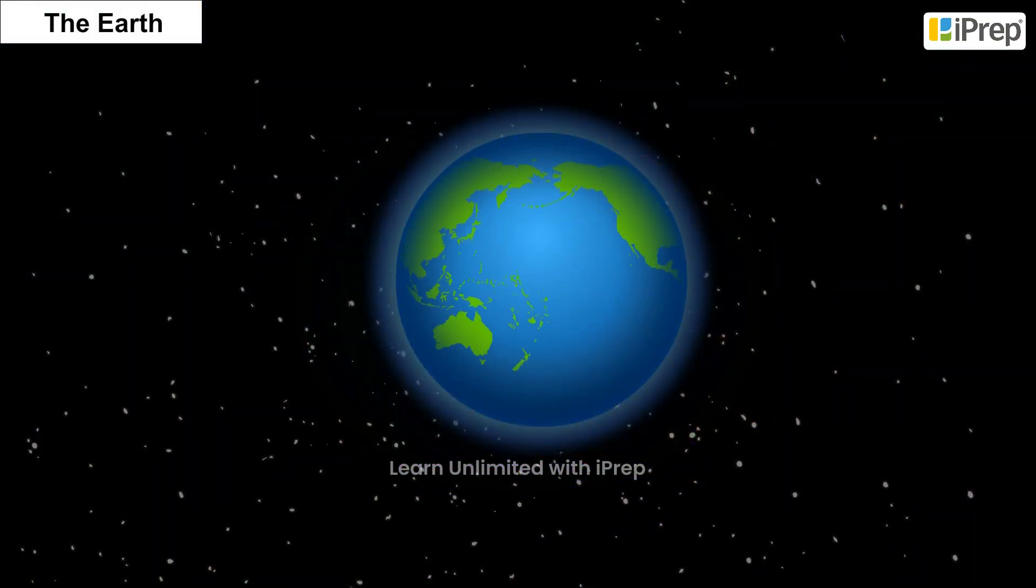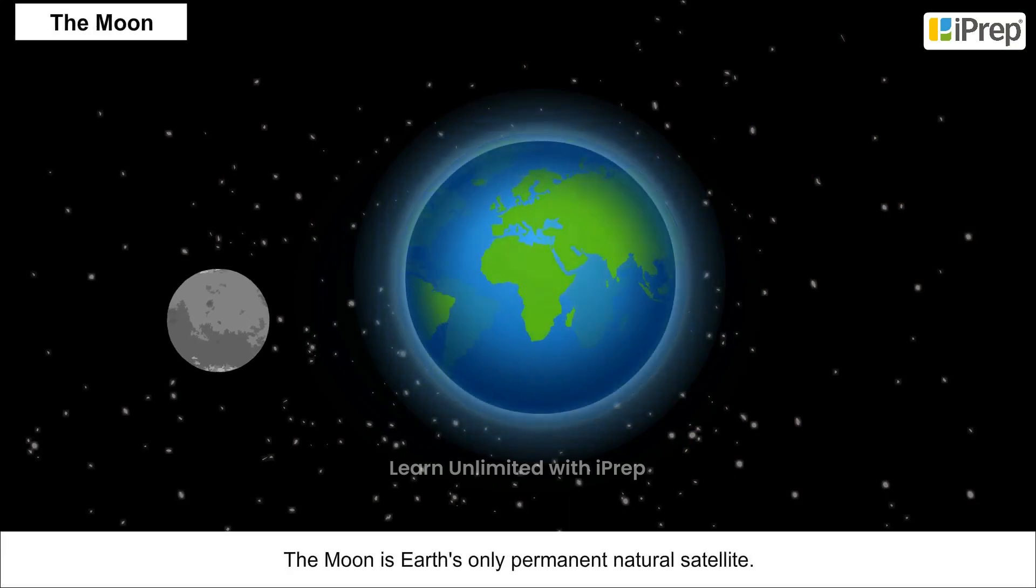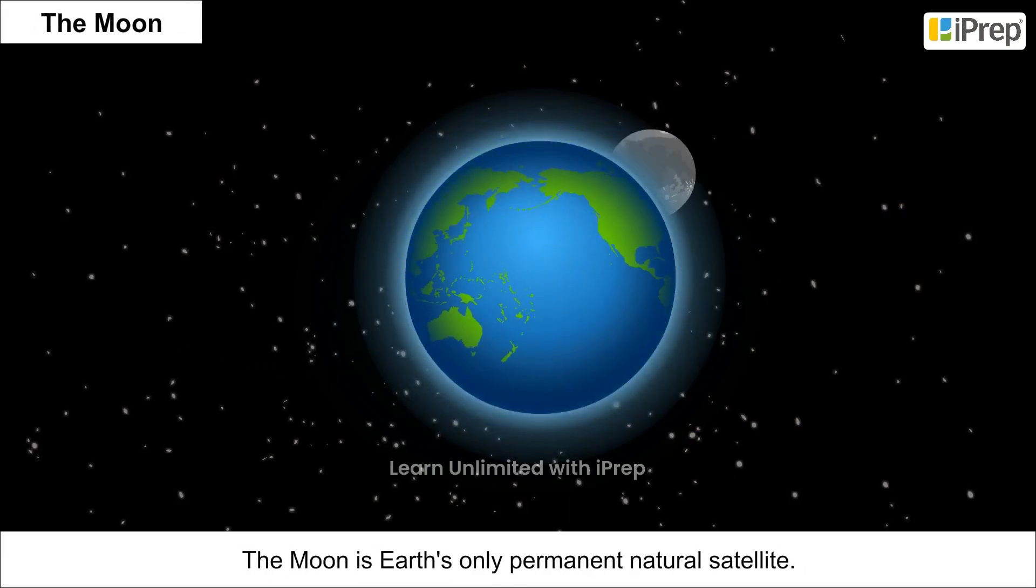Therefore, it is called the blue planet. The Moon is Earth's only permanent natural satellite.